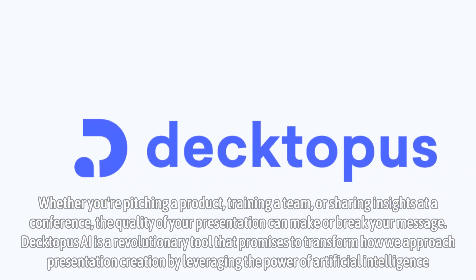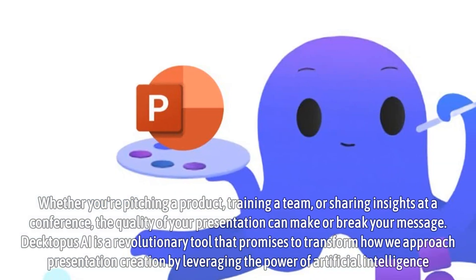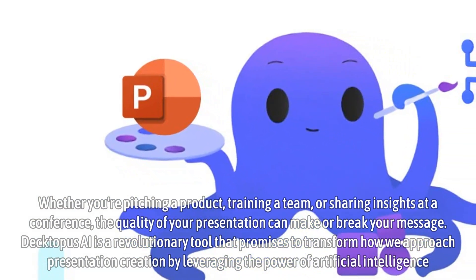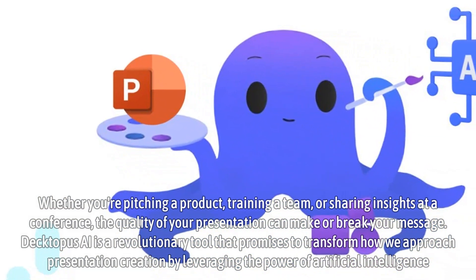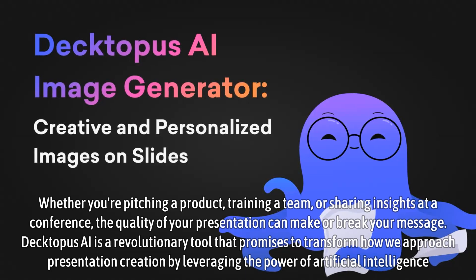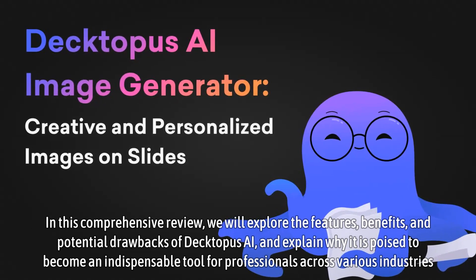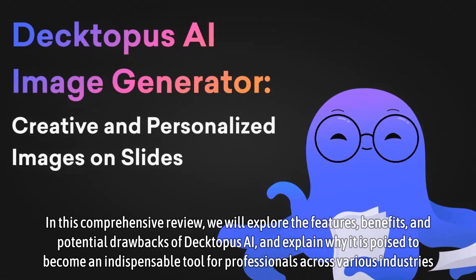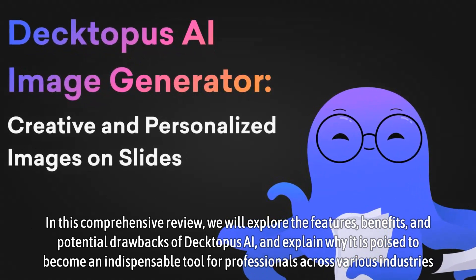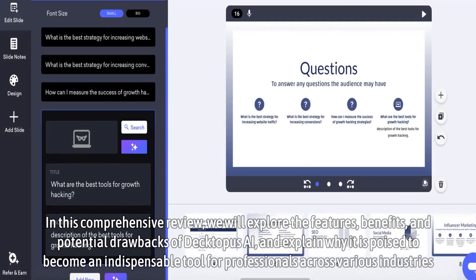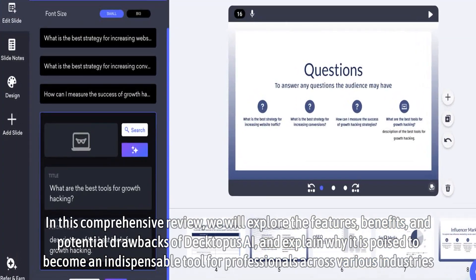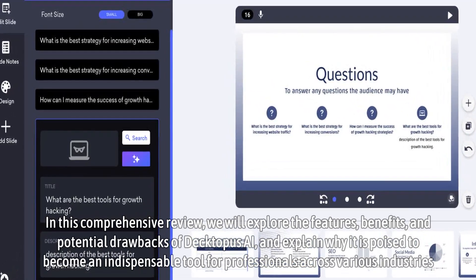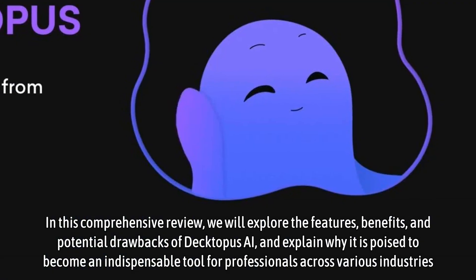Dectopus AI is a revolutionary tool that promises to transform how we approach presentation creation by leveraging the power of artificial intelligence. In this comprehensive review, we will explore the features, benefits, and potential drawbacks of Dectopus AI, and explain why it is poised to become an indispensable tool for professionals across various industries.